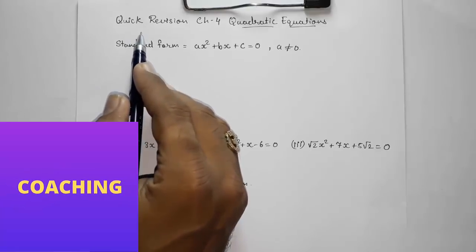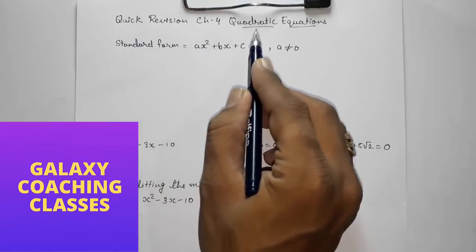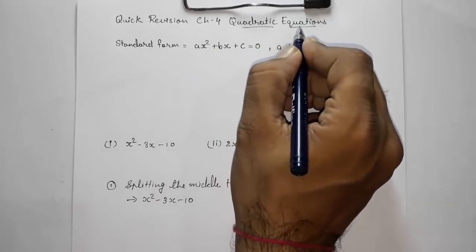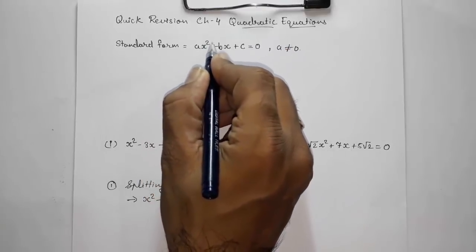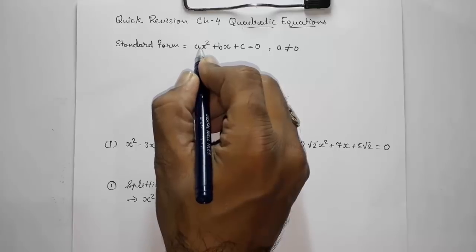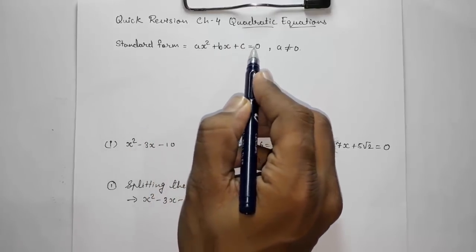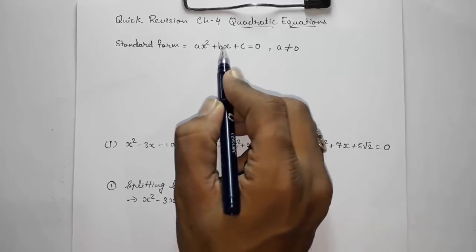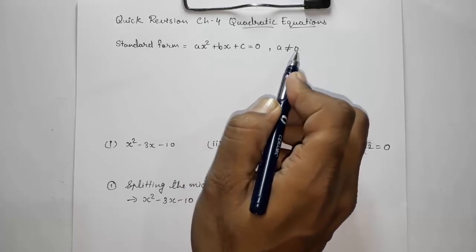Hello friends, today we are going to do a quick revision of Chapter 4: Quadratic Equations. A quadratic equation is any equation having the highest power of degree 2. This is the standard form of a quadratic equation, where 'a' cannot be equal to 0. If 'b' is 0 or 'c' is 0, that is still okay.